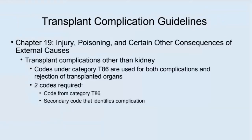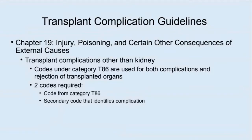It becomes more complicated when coding complications of a transplant. The guidelines are divided into two: one set for kidney transplant complications, and a separate set for other transplant procedures. For other transplant procedures, these are coded to Chapter 19, Injury, Poisoning, and Certain Other Consequences of External Causes, using a code under Category T86. Two codes are going to be required — first a code from Category T86.